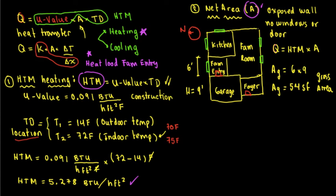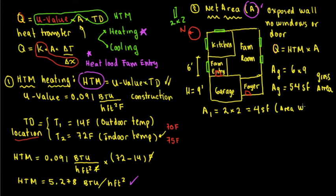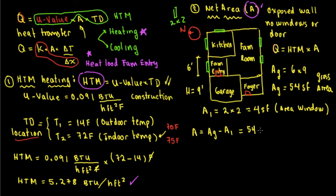The windows — we're making assumptions here — are going to be 2 by 2. So area 1, windows, is going to be 2 times 2 equals 4 square feet. That's the area of windows, which goes to the fenestration load. So the net area is going to be equal to the gross minus the windows: 54 minus 4 square feet. My net area is going to be equal to 50 square feet of exposed wall.